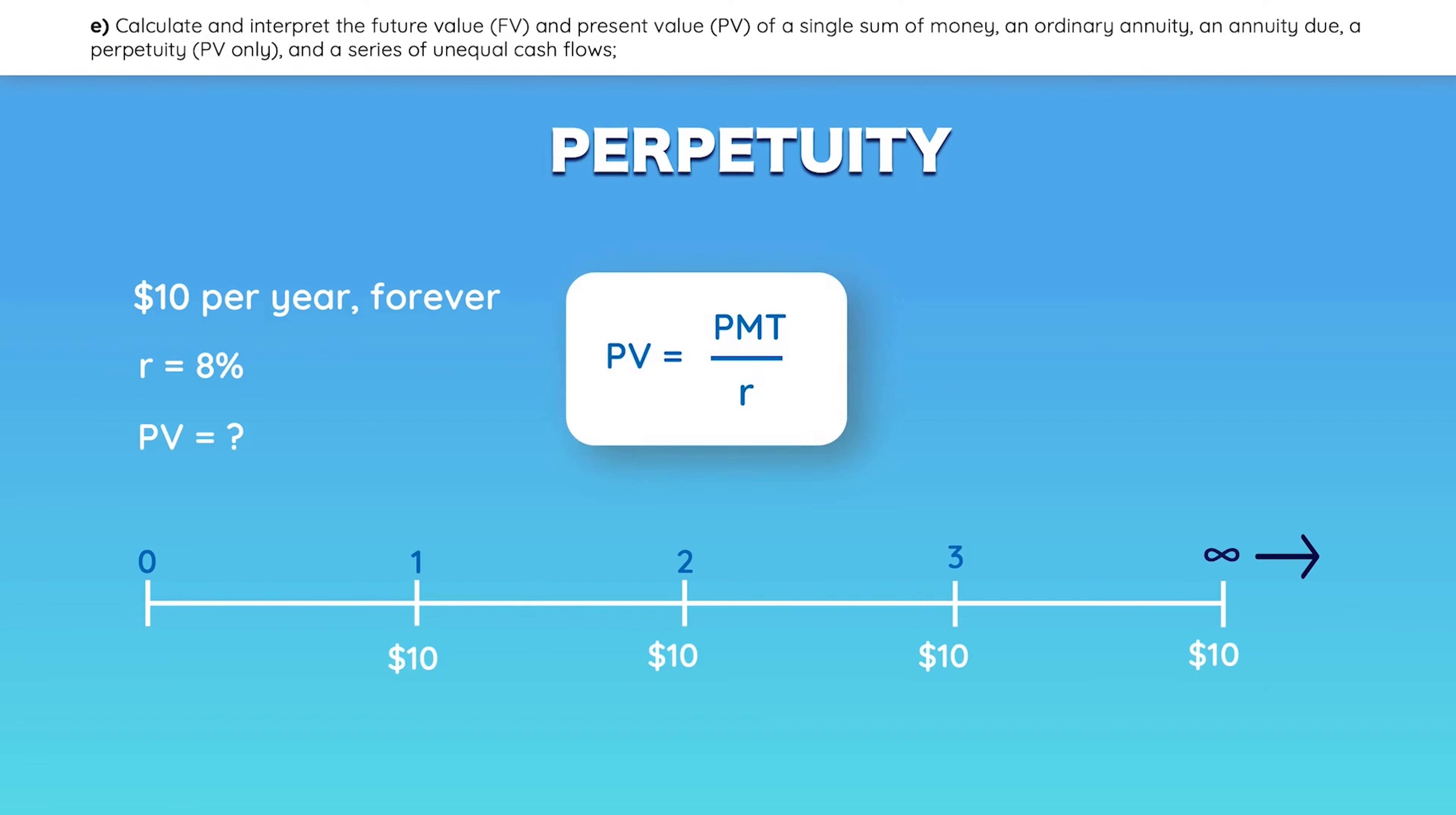But be careful here. If payments are received semi-annually, you would divide the stated rate by 2. If they were monthly, you divide it by 12, and so on.